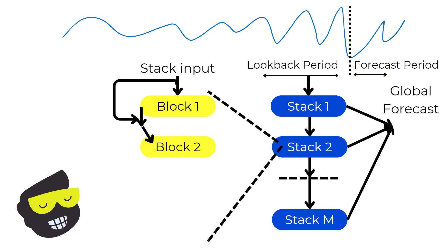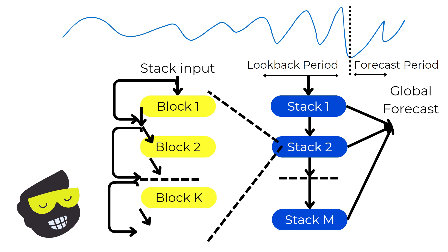Each stack is made up of multiple blocks that work sequentially. After block 1 processes the stack input and generates its forecast and backcast, block 2 takes in both the residuals from block 1 and the original stack input. This dual input helps block 2 refine the predictions more effectively. For example, block 1 might produce a forecast that is slightly off, and block 2 uses the residuals to correct these errors while also considering the original data to enhance accuracy. This process continues through all blocks up to block K.